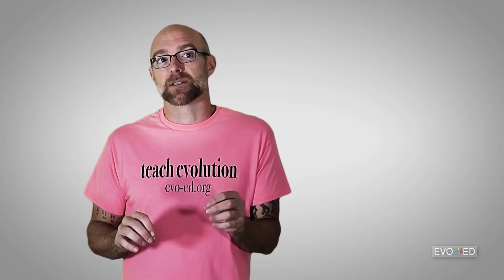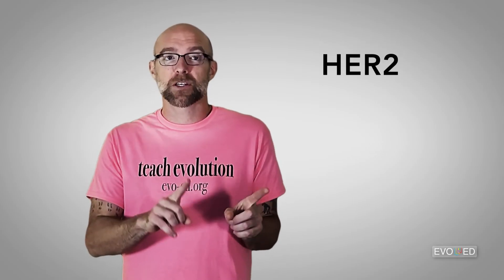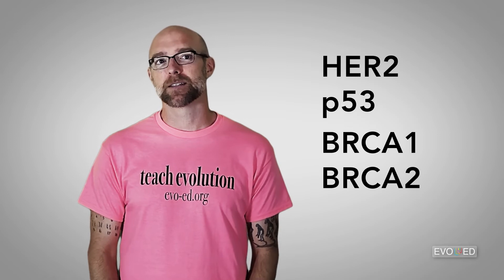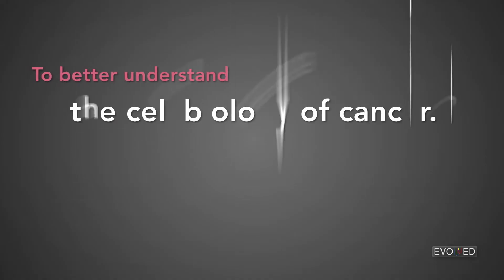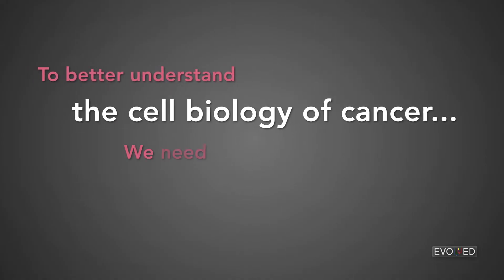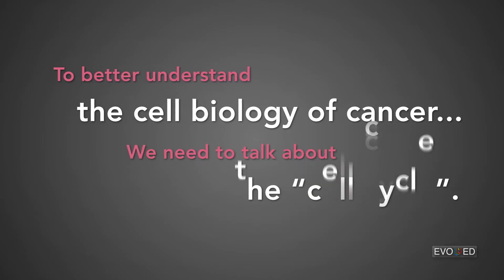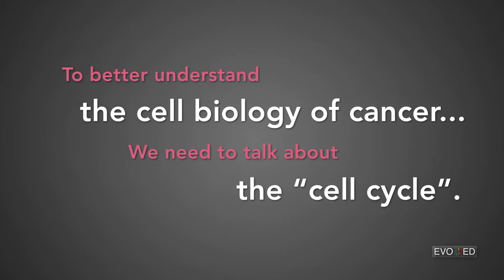Here we're going to look at four proteins called HER2, P53, BRCA1, and BRCA2. To better understand the cell biology of cancer, we need to talk a little bit about the cell cycle.